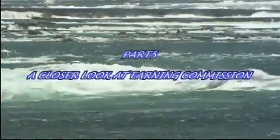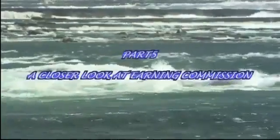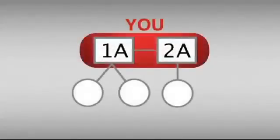Part 5: A closer look at earning commission. In this graph, you are 2A distributor. Thus, you have 1A line, which is A and B, and 2A line, which is C.